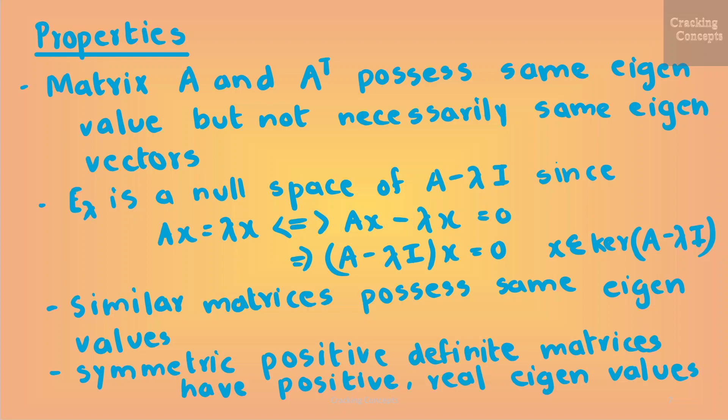Now we will look into some useful properties of eigenvalues and eigenvectors. The matrix A and its transpose possess the same eigenvalues but not necessarily the same eigenvectors. The eigenspace E_λ is the null space of (A − λI), since Ax = λx implies (A − λI)x = 0, where x belongs to the kernel of (A − λI). Similar matrices possess the same eigenvalues. Symmetric positive definite matrices always have positive real eigenvalues.